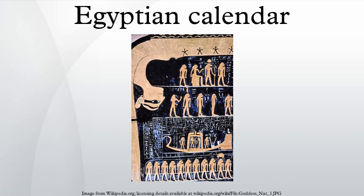The ancient civil Egyptian calendar had a year that was 365 days long. The year consisted of 12 months of 30 days each, plus 5 extra days at the end of the year. The months were divided into 3 weeks of 10 days each.